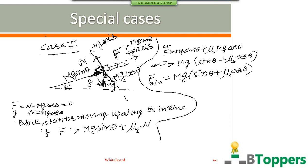Suppose a force equal to this minimum force needed to just start the block moving up along the inclined plane is applied on the block, and the same force is maintained even after the motion begins. Then during the motion, the frictional force on the block is kinetic friction.